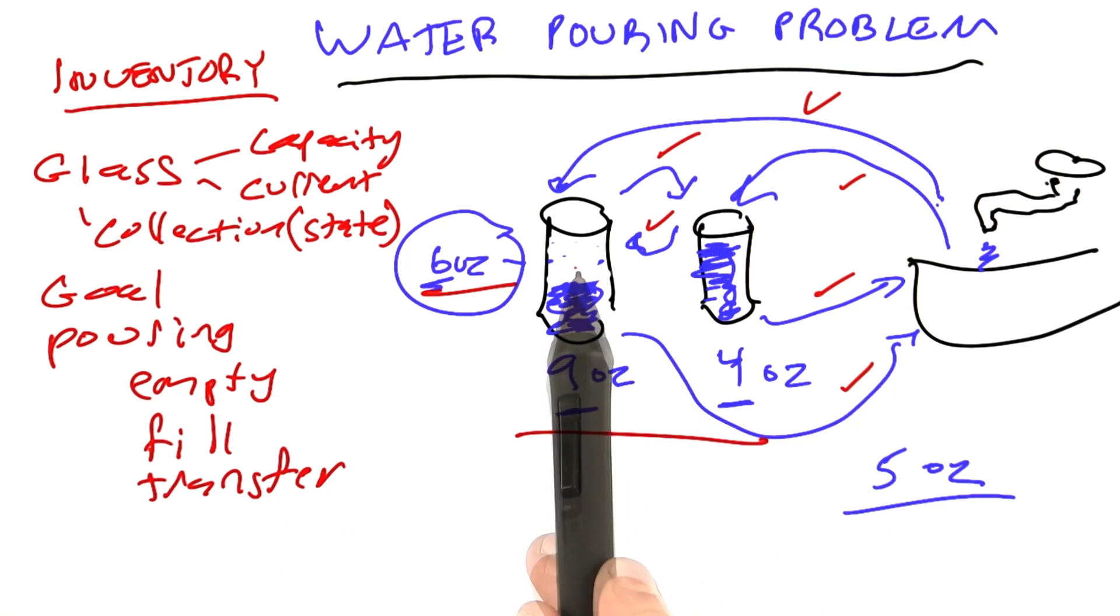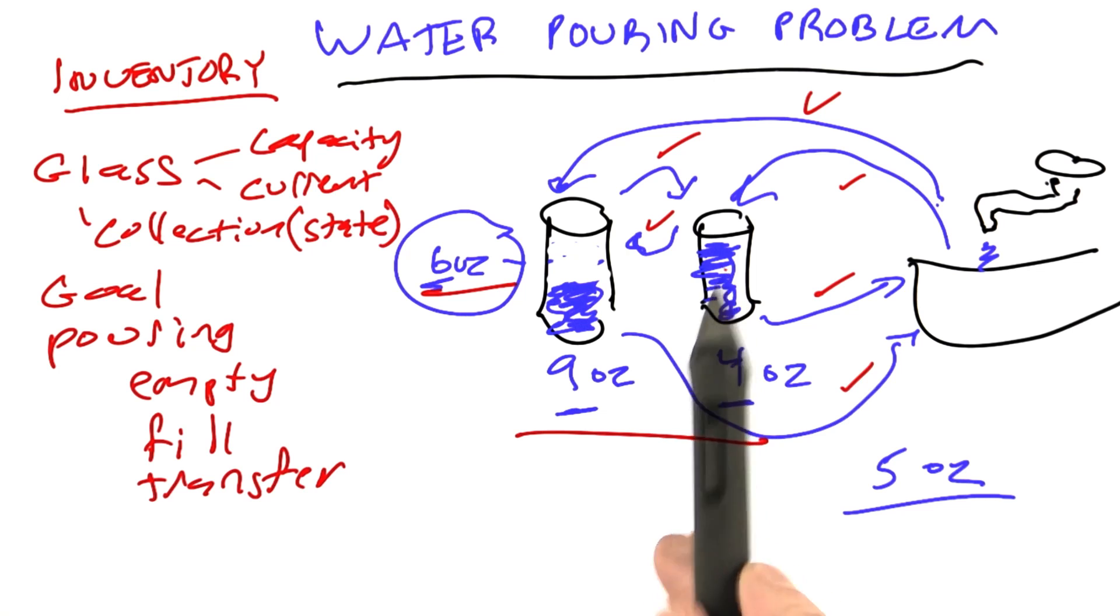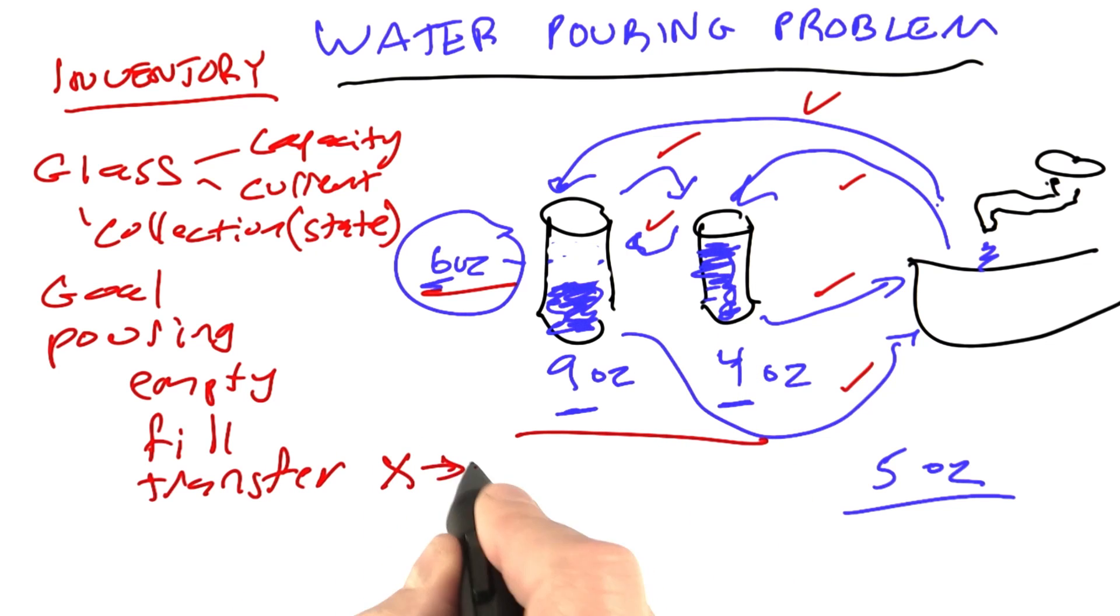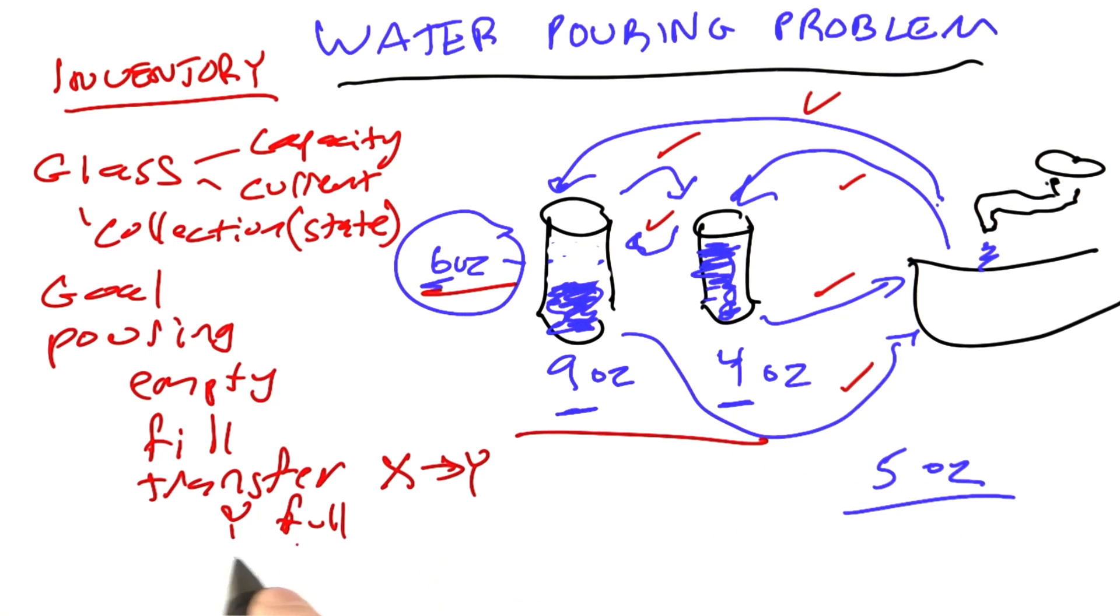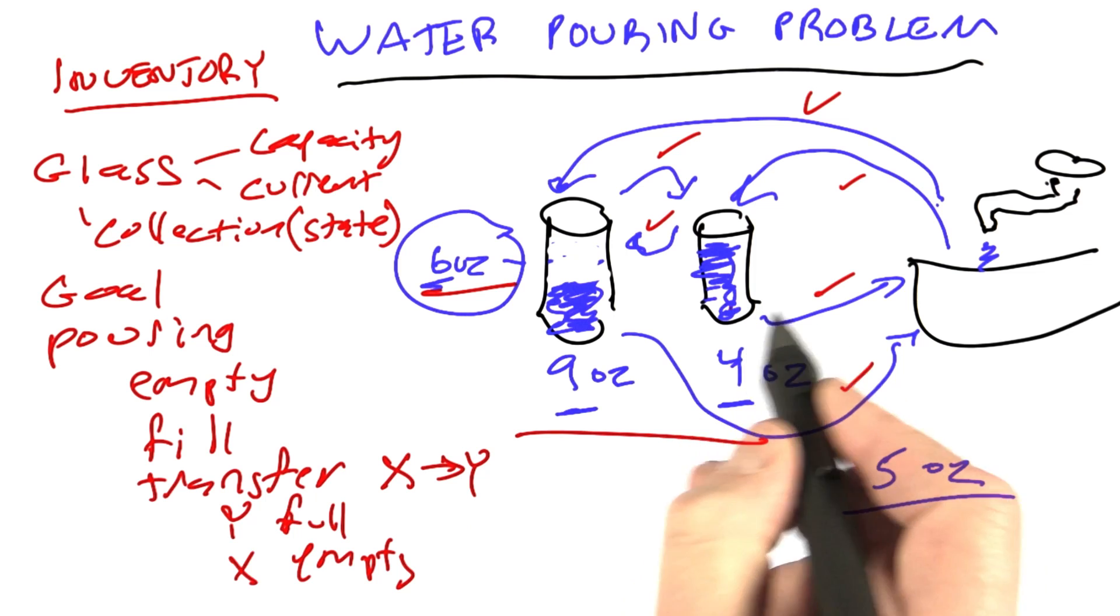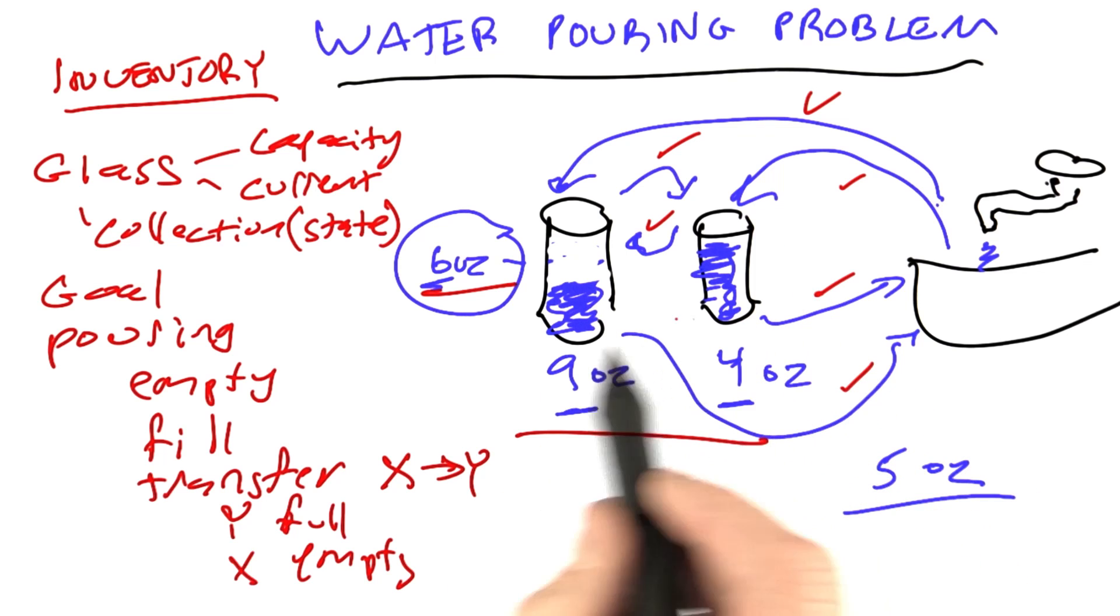When we were transferring from the 9 ounce into the 4 ounce, so we transfer from x to y, we can do that until y is full. That's what happened here. The 4 ounce was full. Or we could do it until x is empty. If we started to pour back 4 ounces from here into an empty one, we could do it until it was empty.